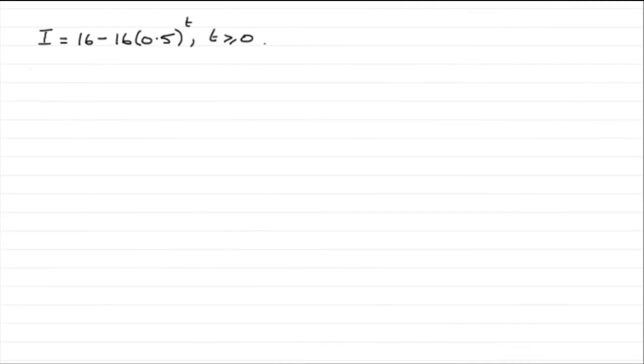Okay, so we're given that I equals 16 minus 16 times 0.5 to the power t, where t is greater than or equal to 0, and we've got to find dI/dt when t is 3.